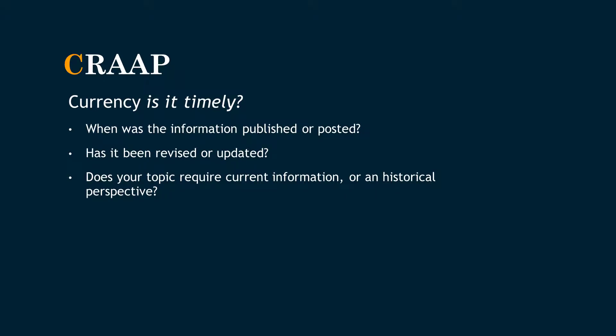For currency, you want to ask yourself when. When was the information published or posted? And has it been revised or updated? Because some information has an expiration date, especially in disciplines like science or medicine, where new discoveries are made all the time. For example, if you're looking at a source from 15 or 20 years ago, it may have Pluto listed as a planet. But in 2006, Pluto was demoted to a minor planet or a dwarf planet, so the outdated information you found would have inaccuracies.